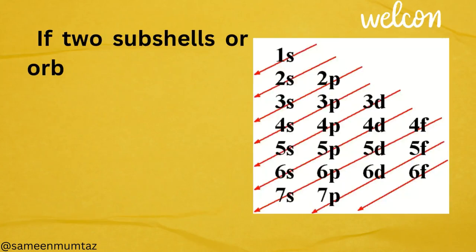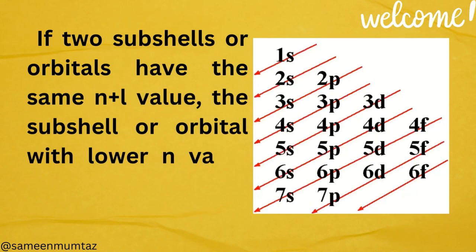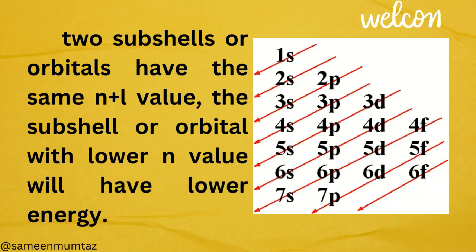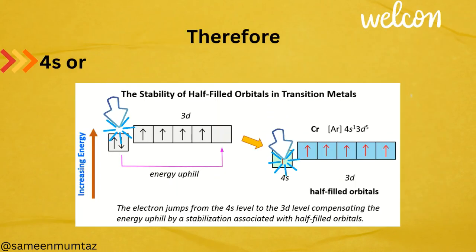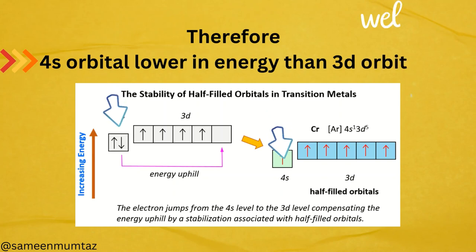If two subshells or orbitals have the same n plus l value, the subshell or orbital with lower n value will have lower energy. Therefore, 4s orbital is lower in energy than 3d orbital.